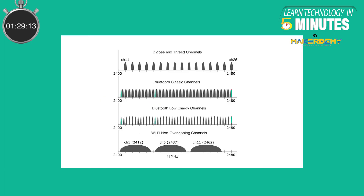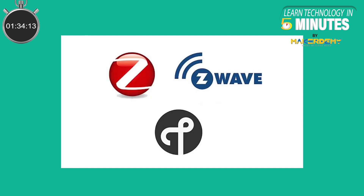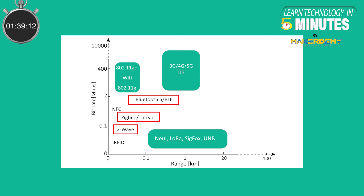Another benefit is improvement of wireless coexistence because of the reduced radio on time. Compared to other low-power wireless protocols like Zigbee, Z-Wave, and Thread, Bluetooth 5.0 offers the highest data rate even at the original 1 Mbps data rate. With the addition of the new high-speed mode, more potential IoT applications become more feasible.